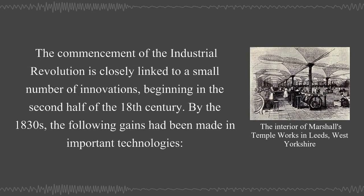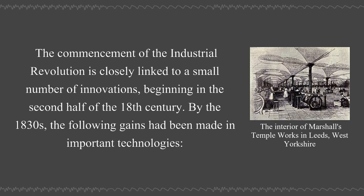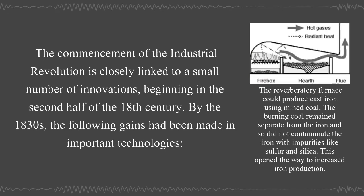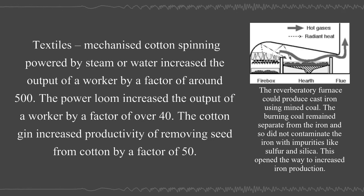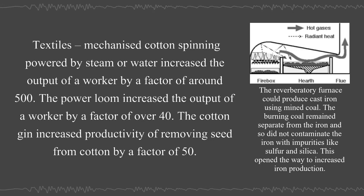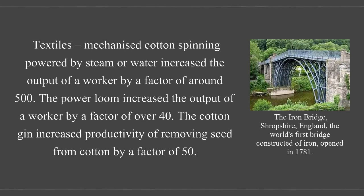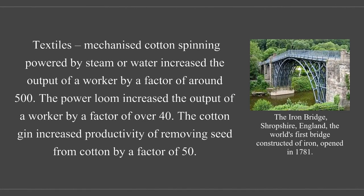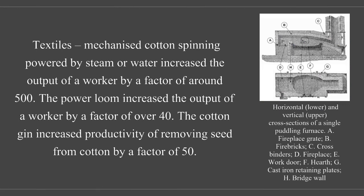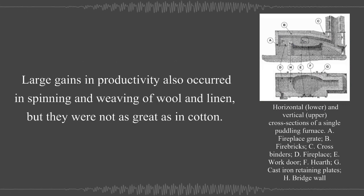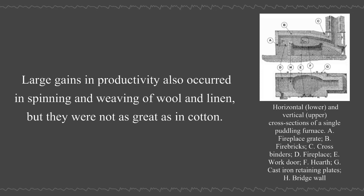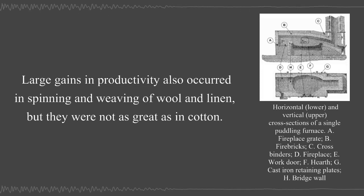The commencement of the Industrial Revolution is closely linked to a small number of innovations beginning in the second half of the 18th century. By the 1830s, important gains had been made in textiles: mechanized cotton spinning powered by steam or water increased the output of a worker by a factor of around 500. The power loom increased the output of a worker by a factor of over 40. The cotton gin increased productivity of removing seed from cotton by a factor of 50. Large gains in productivity also occurred in spinning and weaving of wool and linen, but not as great as in cotton.